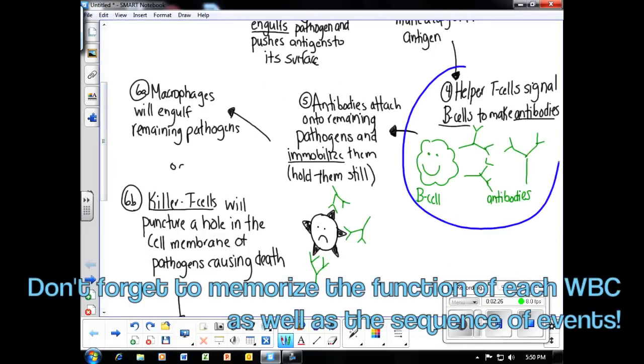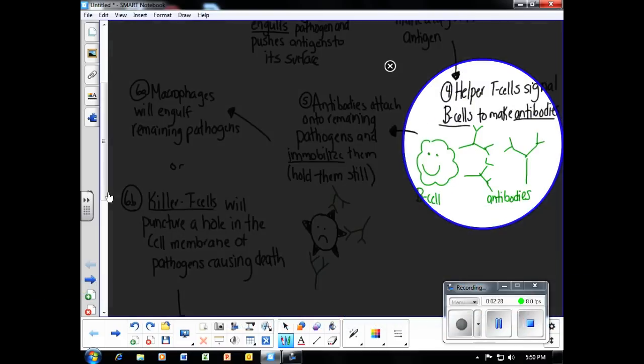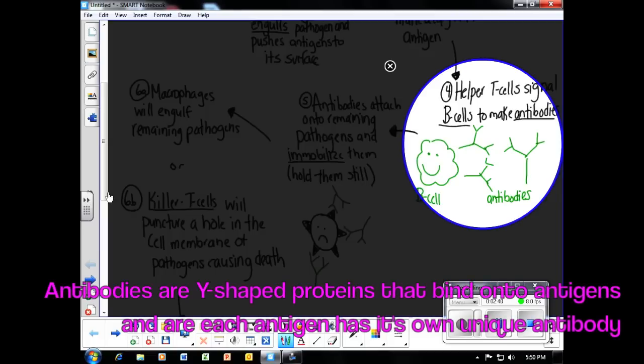In step number four of the immune response, the helper T cell will then signal B cells, which is another type of white blood cell in the body, to make antibodies. Antibodies often look like Y-shaped and on their ends match the shape of the antigen.